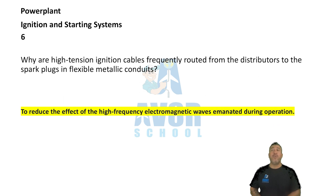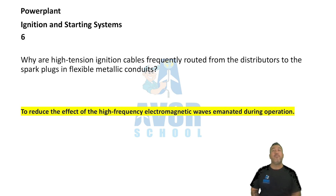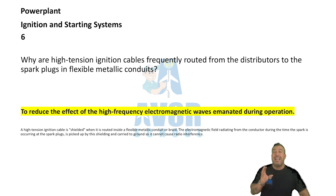Number six: To reduce the effect of high frequency electromagnetic waves emanated during operation. Why are high tension ignition cables frequently routed from the distributors to the spark plugs in flexible metallic conduits? To reduce the effect of high frequency electromagnetic waves emanated during operation.